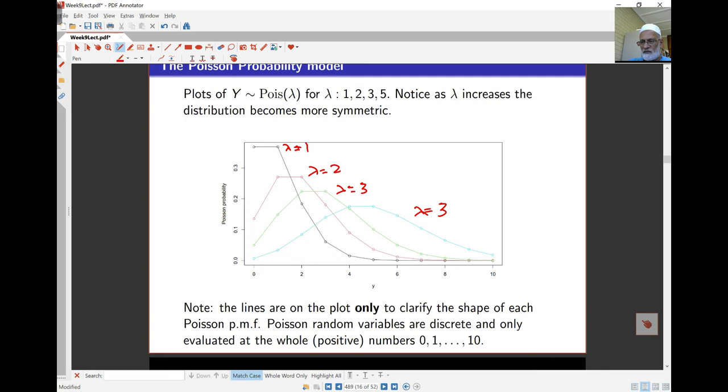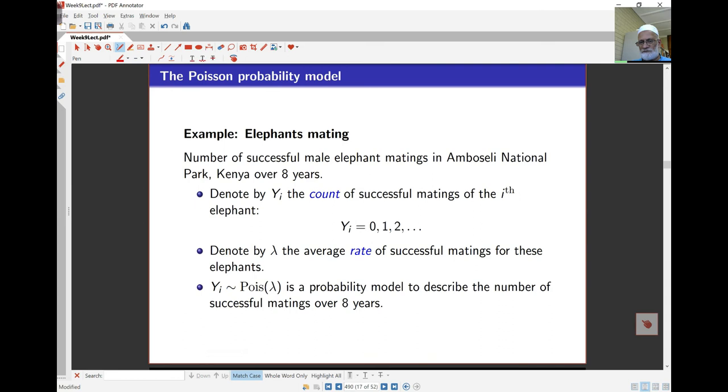In the case of the elephant data here, yi is counts. y equals 0, 1, 2, up to 9, but in theory it can go on forever. Lambda is the average rate of successful matings for these elephants. And we're looking at a period of 8 years over here. So lambda here will be the average rate of successful mating of these elephants over 8 years. So be careful, it's not just per year or any other time frame, it's over 8 years.